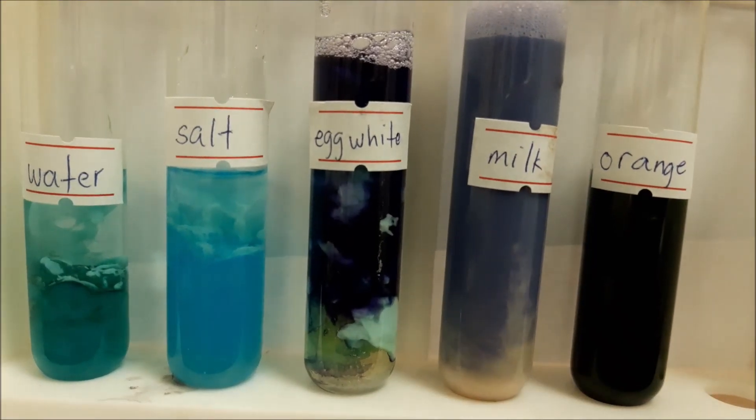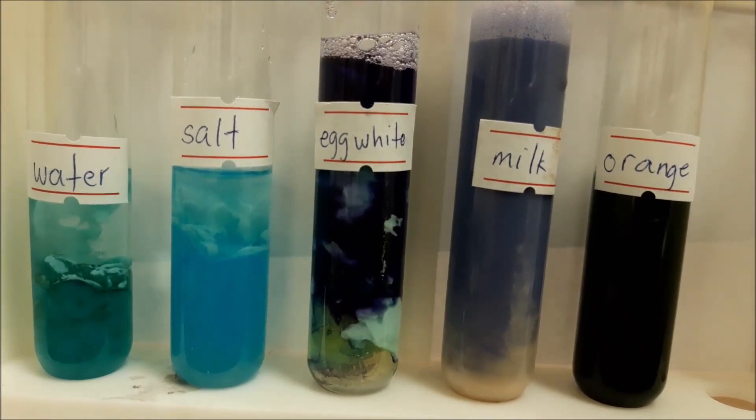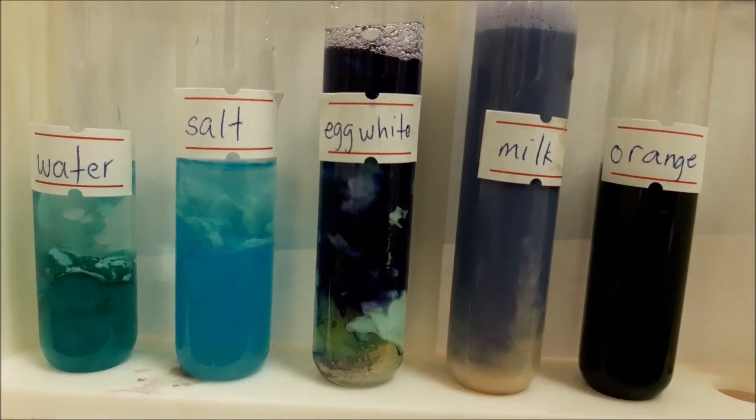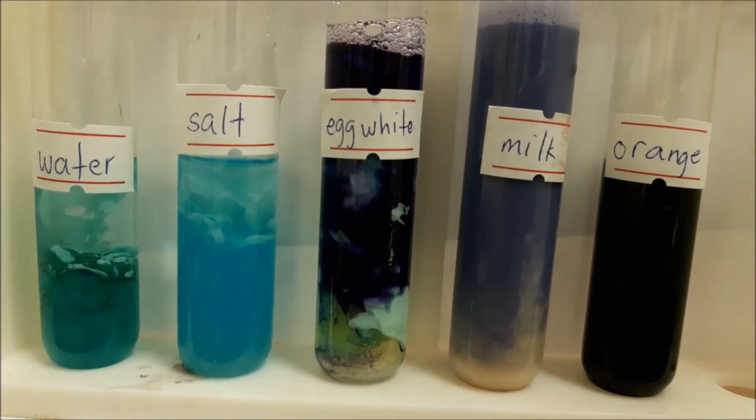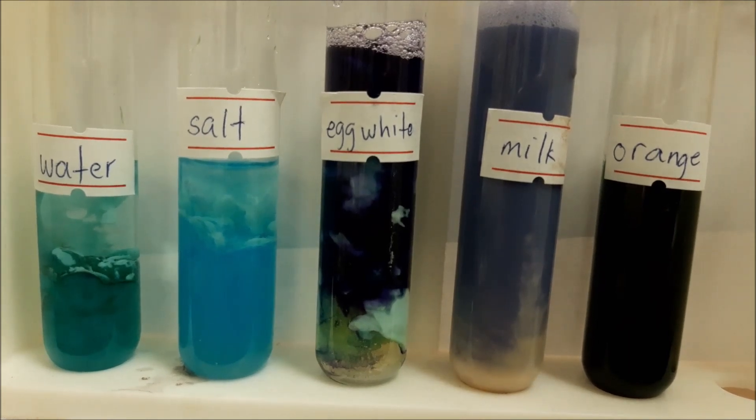To determine which food item has protein on it, we will look at the color. If it turns purple, that are the food items that have protein.